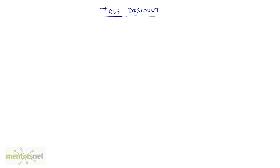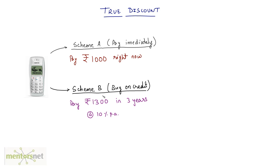In this video we are going to talk about true discount — it is a very interesting topic. To understand this, let us consider a scenario: you go to a mobile shop and decide to purchase a mobile phone. You find out that this mobile phone has basically two schemes — Scheme A and Scheme B.